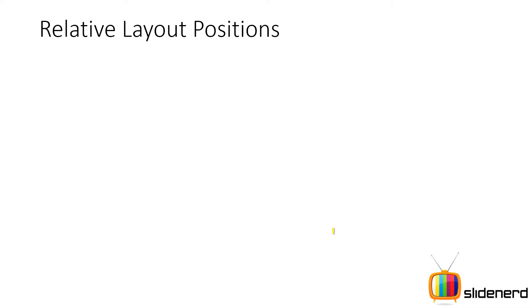Hello from SlideNerd. In the last video I was talking about relative layouts — how it's like a wall and you stick your controls on it like chewing gum, stretching from all sides. So far we've been discussing attributes that define the relationship between your view and the parent, that is the relative layout. We also saw that if we add a text view on top of a button, it gets added on top by default, and we have to specify the relationship between them.